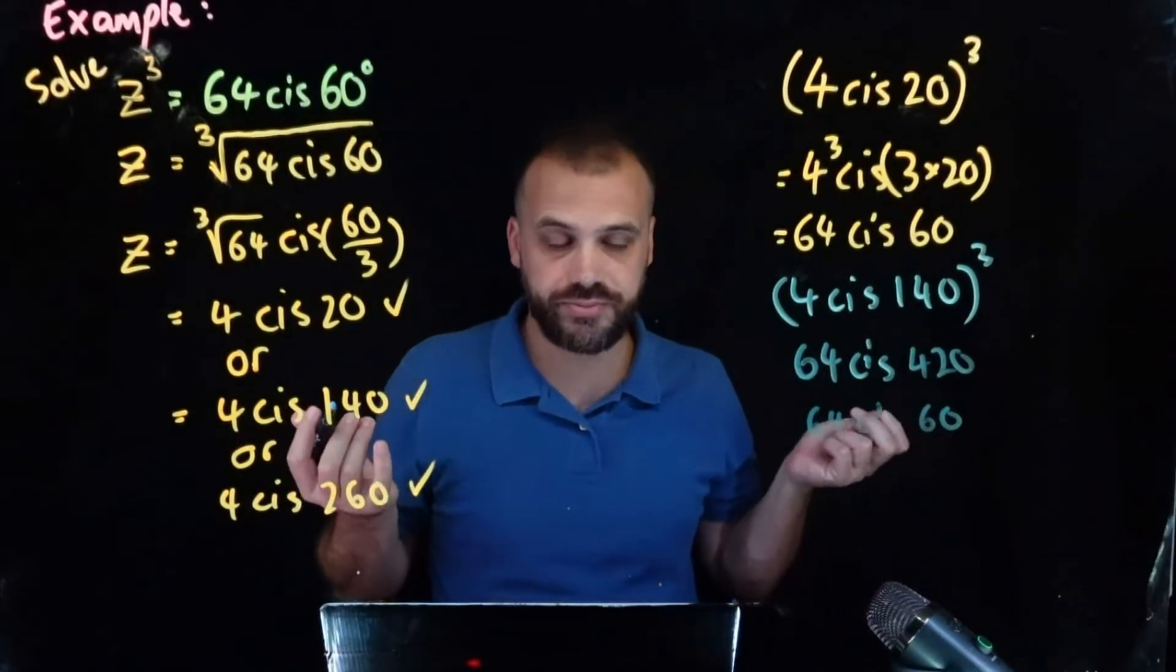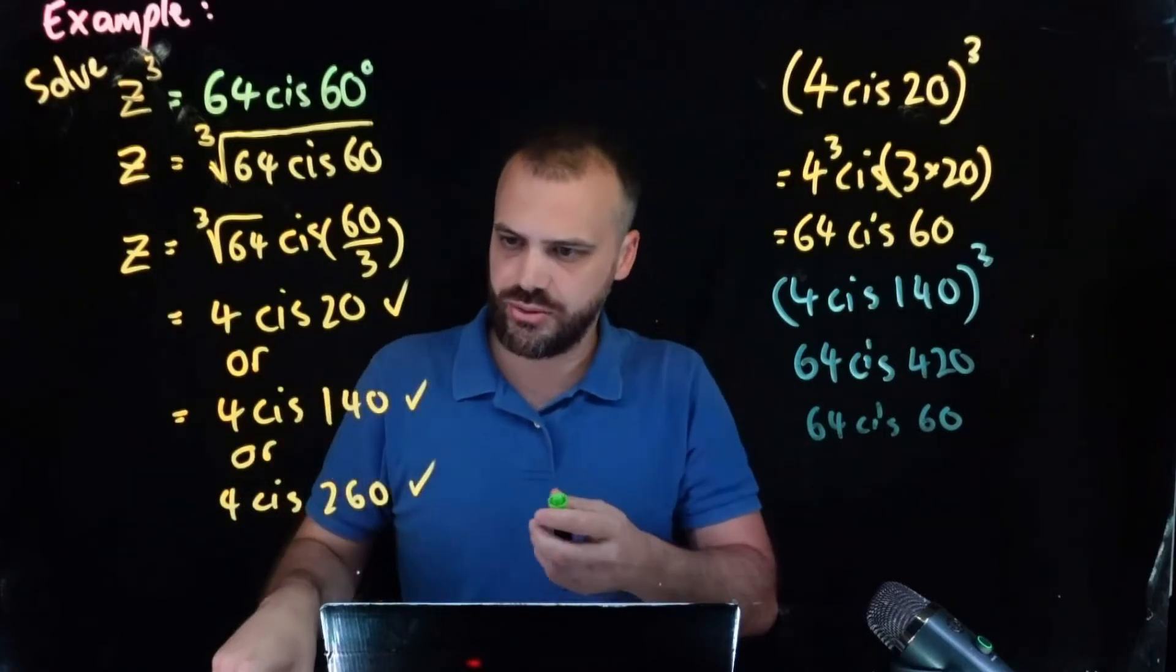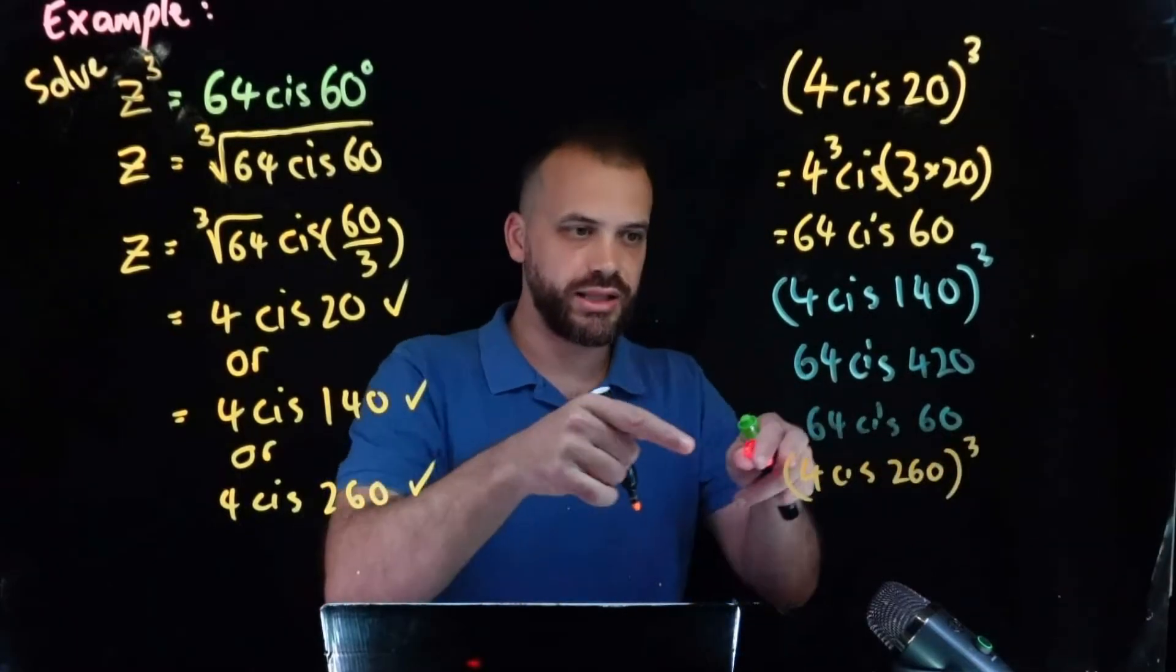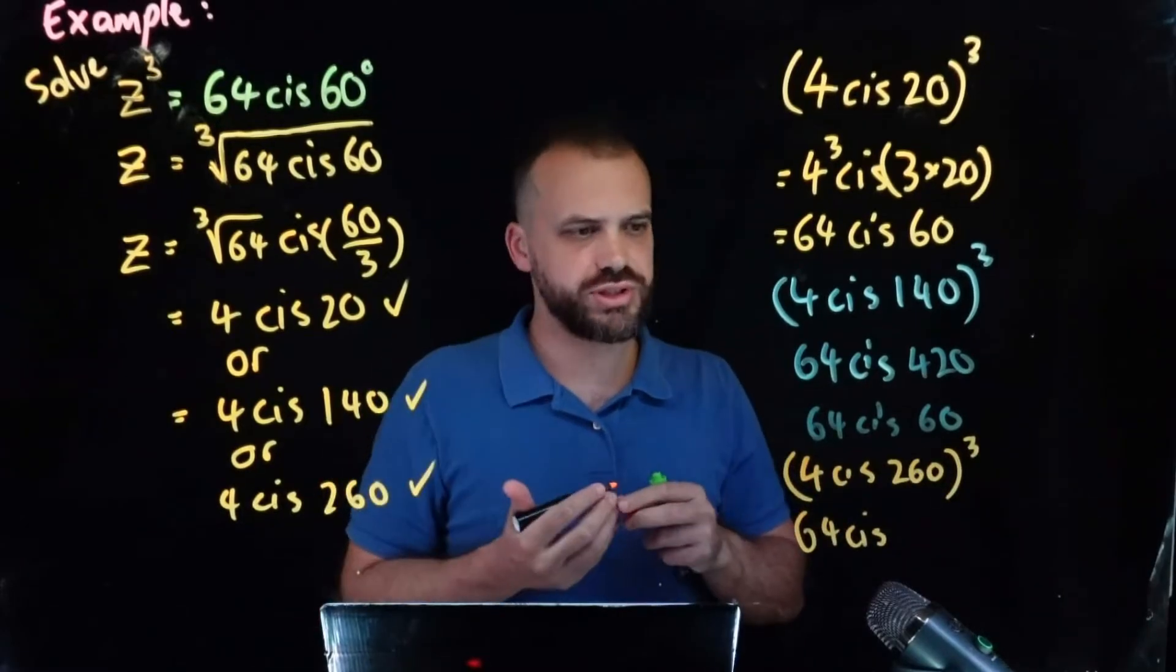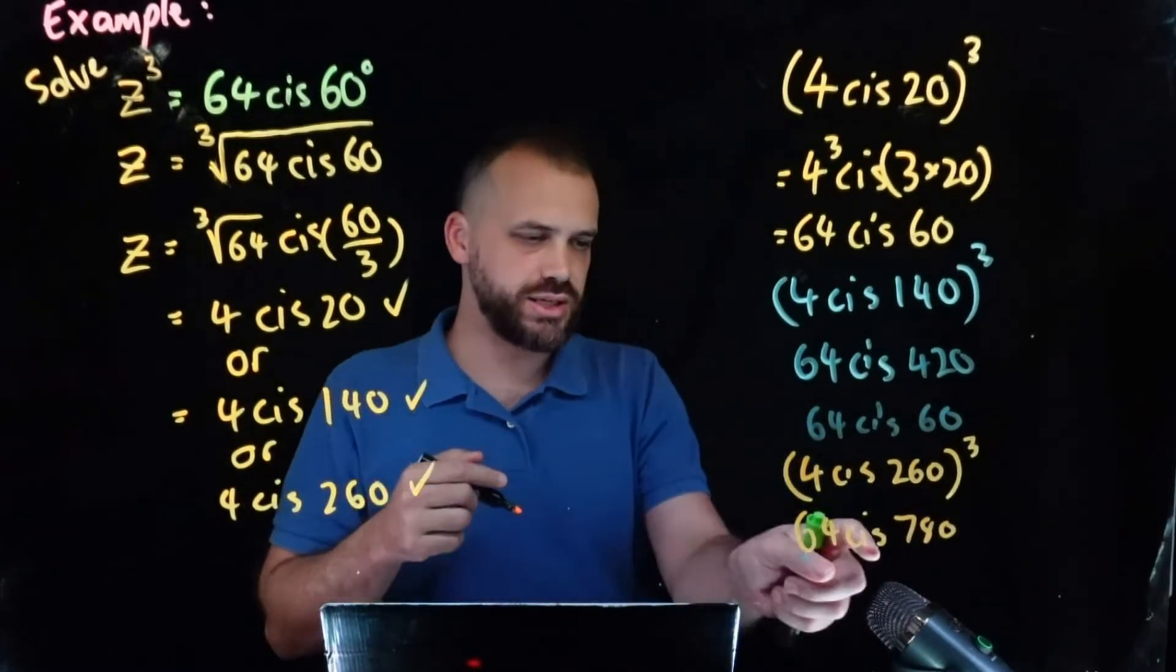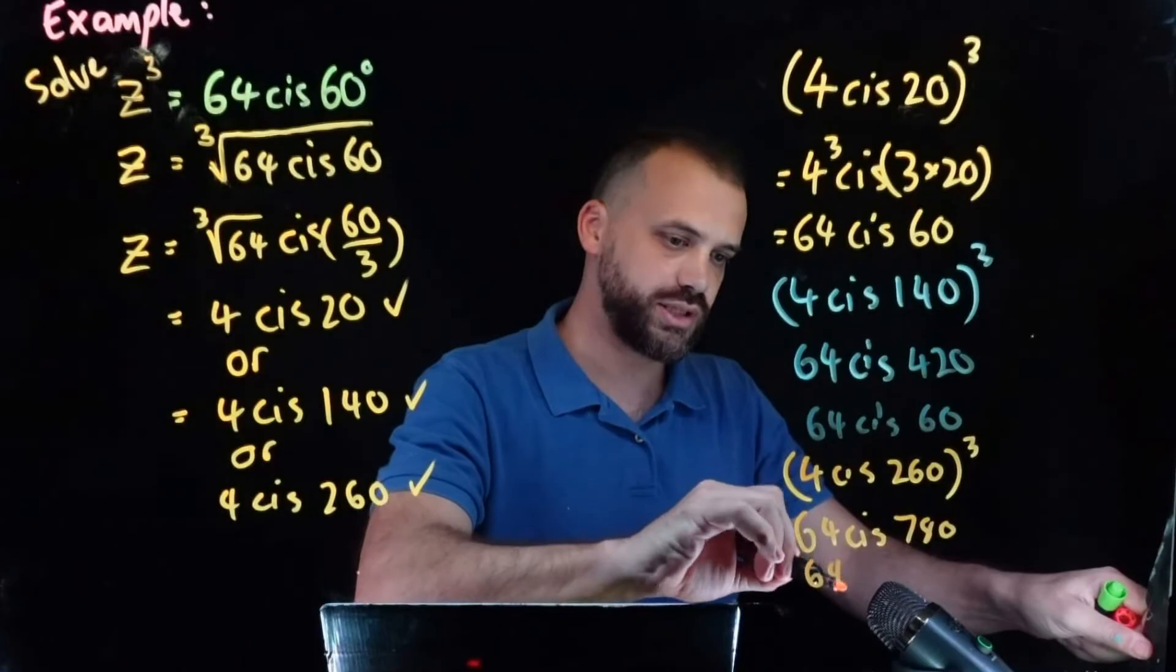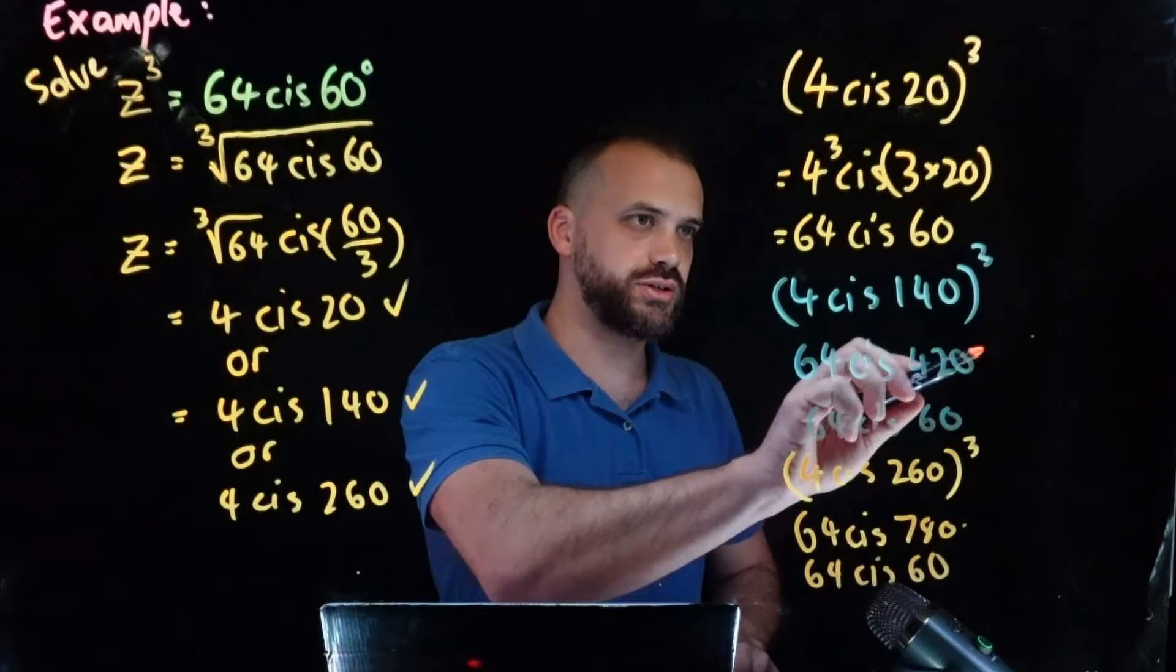And of course we could do that with this one right here. We could say wait is that really the answer? 4 cis 260 cubed, and then when we cube that we get 64 cis 260 times 3 which is 780. 780 we subtract two trips around the circle so 720 degrees and we're left with 64 cis 60.